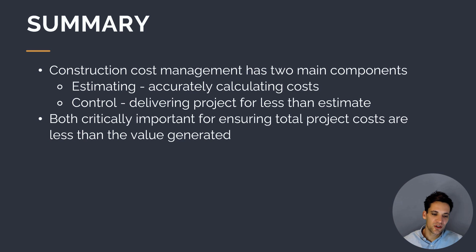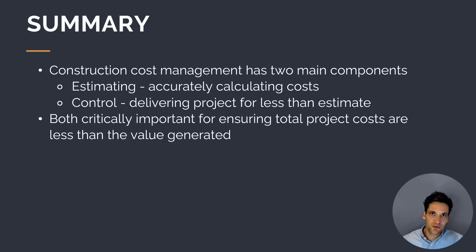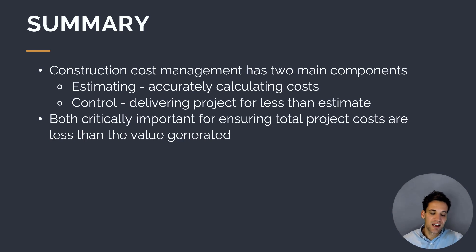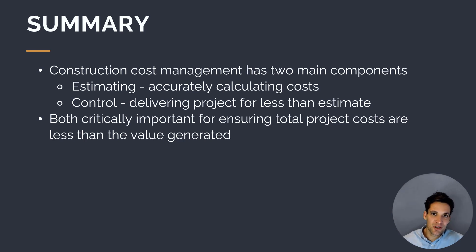To summarize: construction cost management is all about ensuring that our projects are a financial success by delivering the project work for less than the costs we estimated. Construction cost management has two core processes: estimating costs — accurately estimating how much it's going to cost to do something — and controlling costs — delivering the project work for less than our budget. Both functions are critically important to project success, and we need to be thinking about and managing money throughout the entire life cycle of the project.